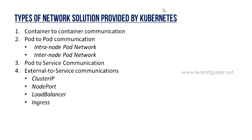The communication types are: container-to-container communication, pod-to-pod communication — which is one of the main things to understand when you have many pods running on either a single node or multiple nodes. That has two types: intra-node pod networking communication and inter-node pod networking communication. The other types are pod-to-service communication and external-to-service communication.